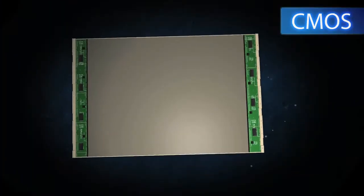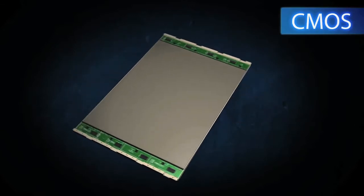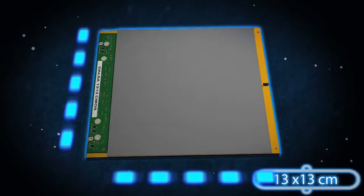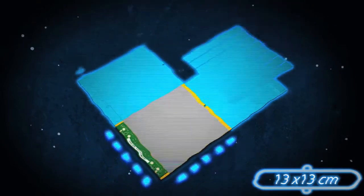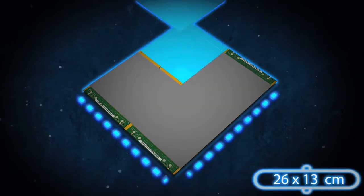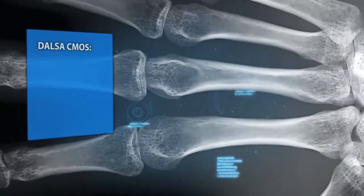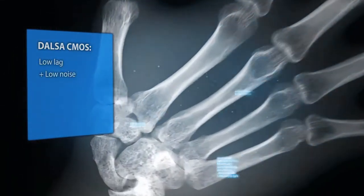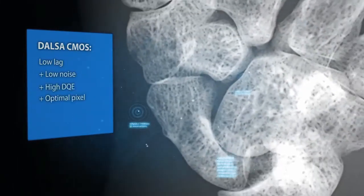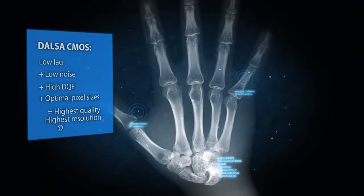This higher level of integration means much lower component cost, much lower assembly complexity, lower power consumption, cooler operation, and longer product lifetime and reliability. The integration that CMOS makes possible also makes it easier for us to build large panel arrays by combining individual detectors. The cumulative advantages our CMOS detectors provide in low lag, low noise, and low dose performance give us the flexibility to choose the best pixel sizes for any application, resulting in the highest quality, highest resolution, low dose x-ray imagery available in the market.